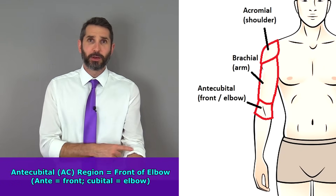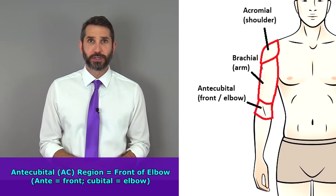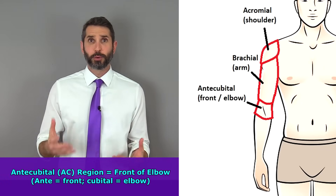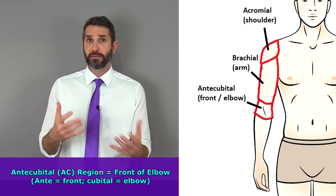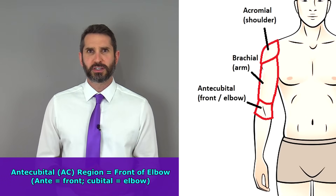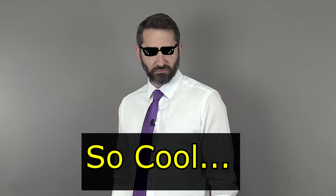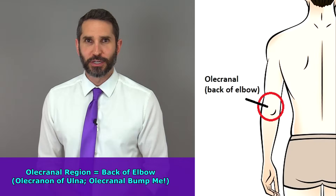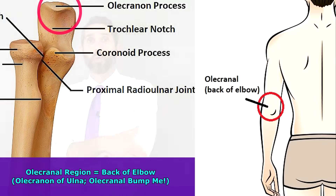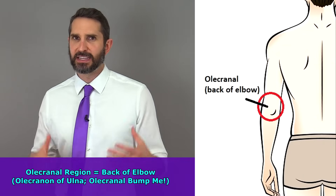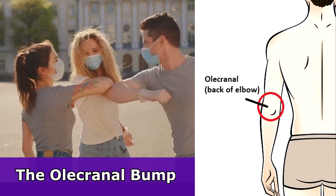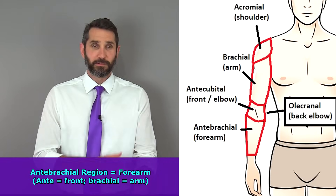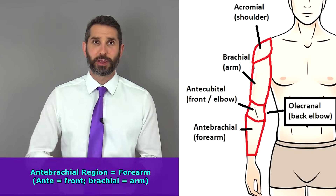The region at the front of the elbow is referred to as the antecubital region. The prefix 'ante' means in front of, and 'cubital' refers to elbow — so it literally means in front of the elbow. A lot of nurses just call it the AC; they'll say 'I just started an 18 gauge in that patient's AC.' The olecranon region is that part on the back of the elbow, where the olecranon is at the proximal part of the ulna.